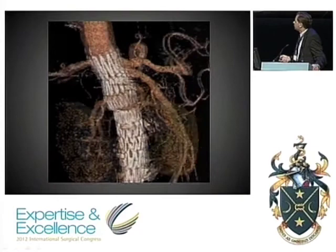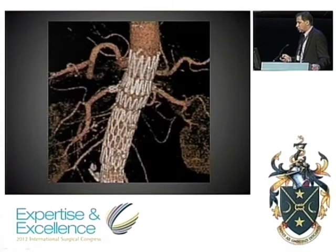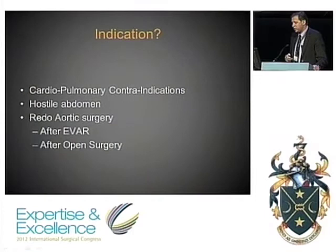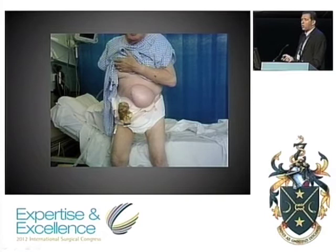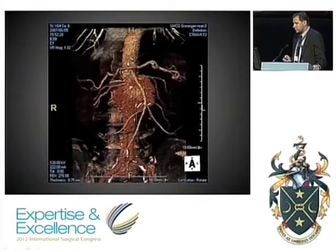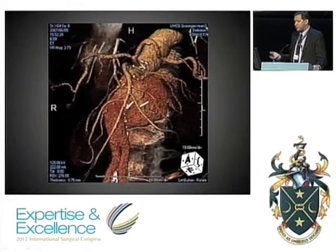This is a postoperative CT scan showing the graft in a good position with two stents inside the renal arteries. Like any new technology, we started with patients who were not ideal candidates for open surgery — those with cardiopulmonary contraindications, a hostile abdomen, or who required redo aortic surgery. One such patient had been operated before on his aorta, had multiple hernias and stomas, and was really not in a nice condition for open repair. He had a large extension of disease and a stomatic aneurysm reaching up to the mesenteric artery.